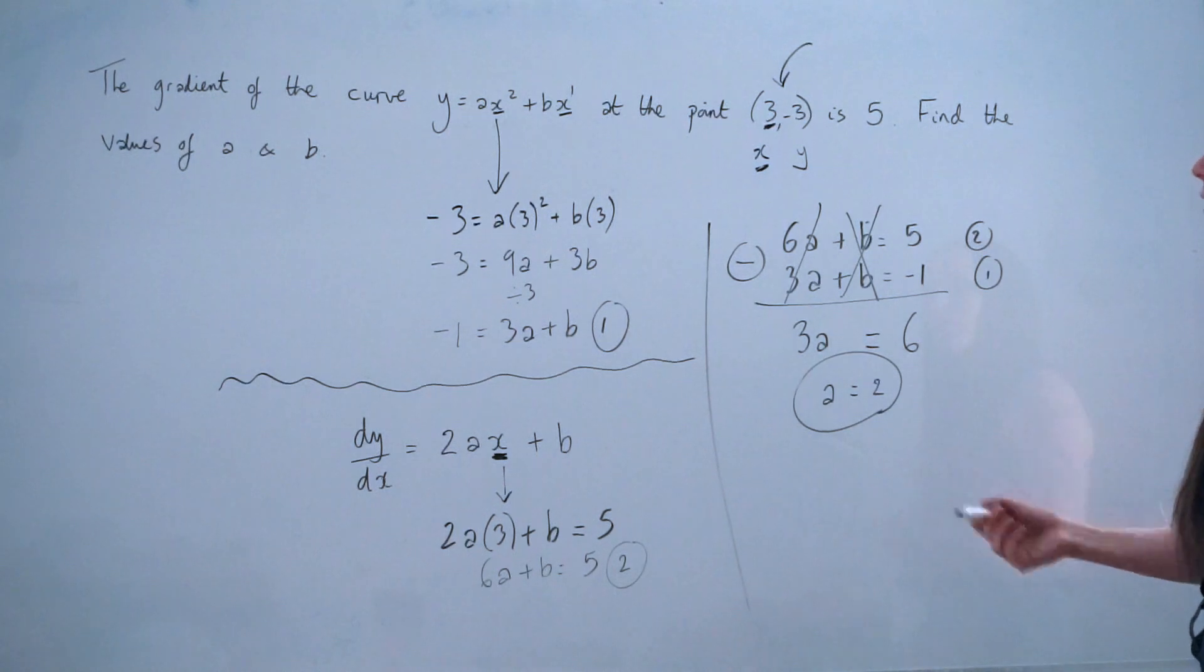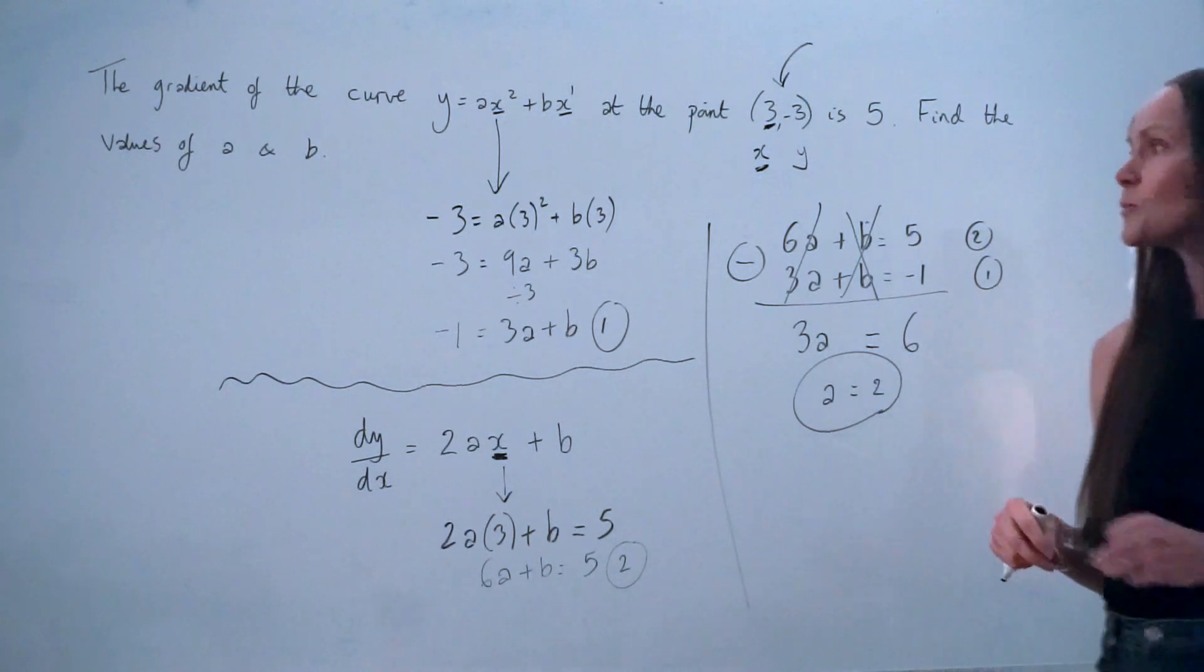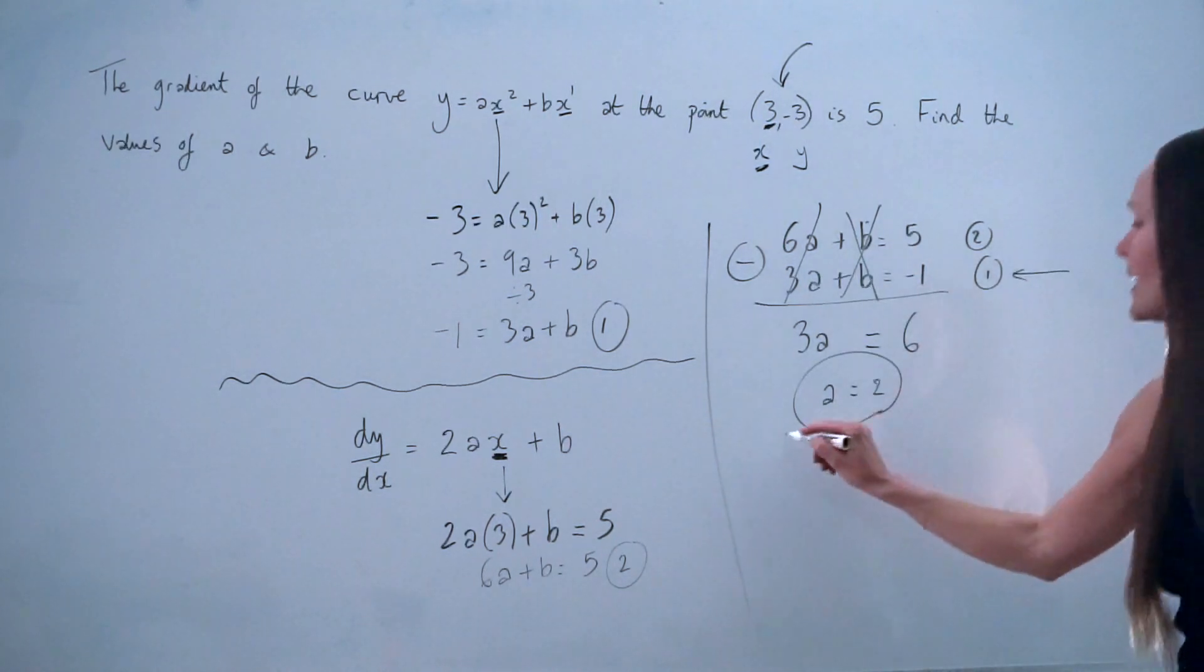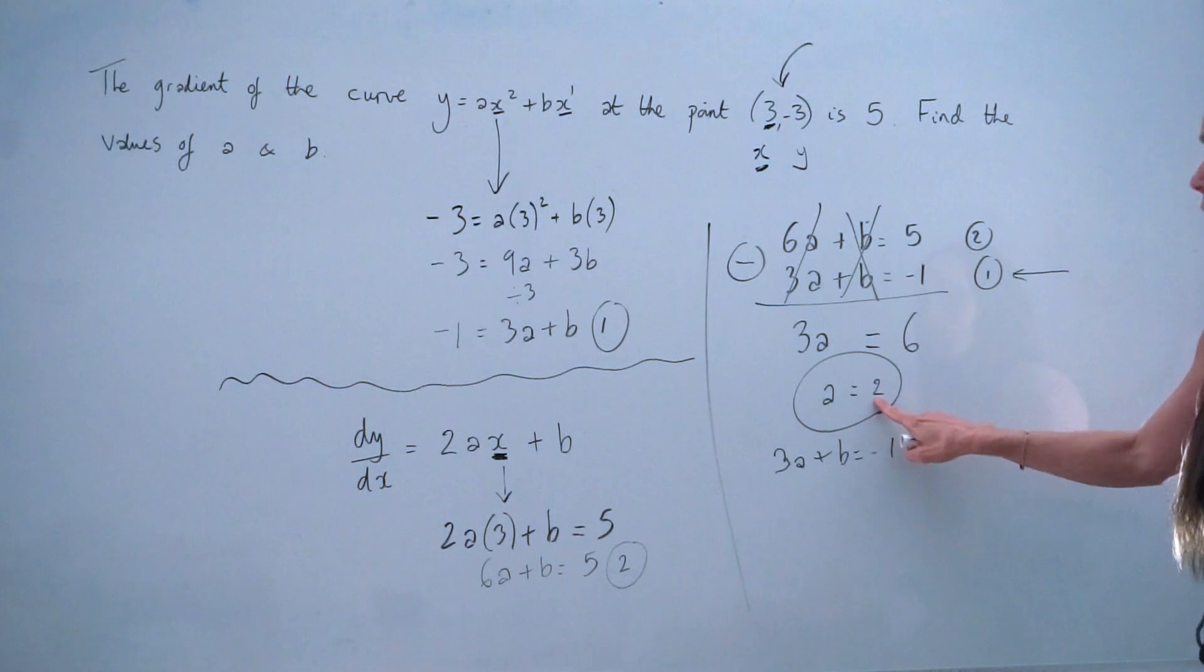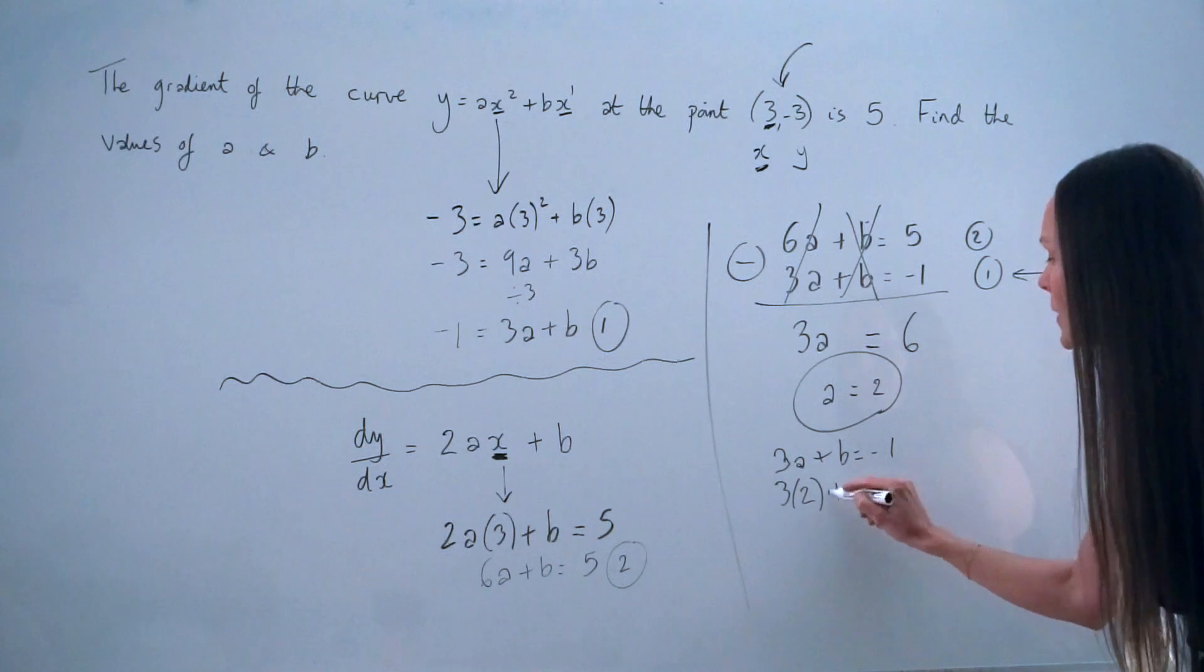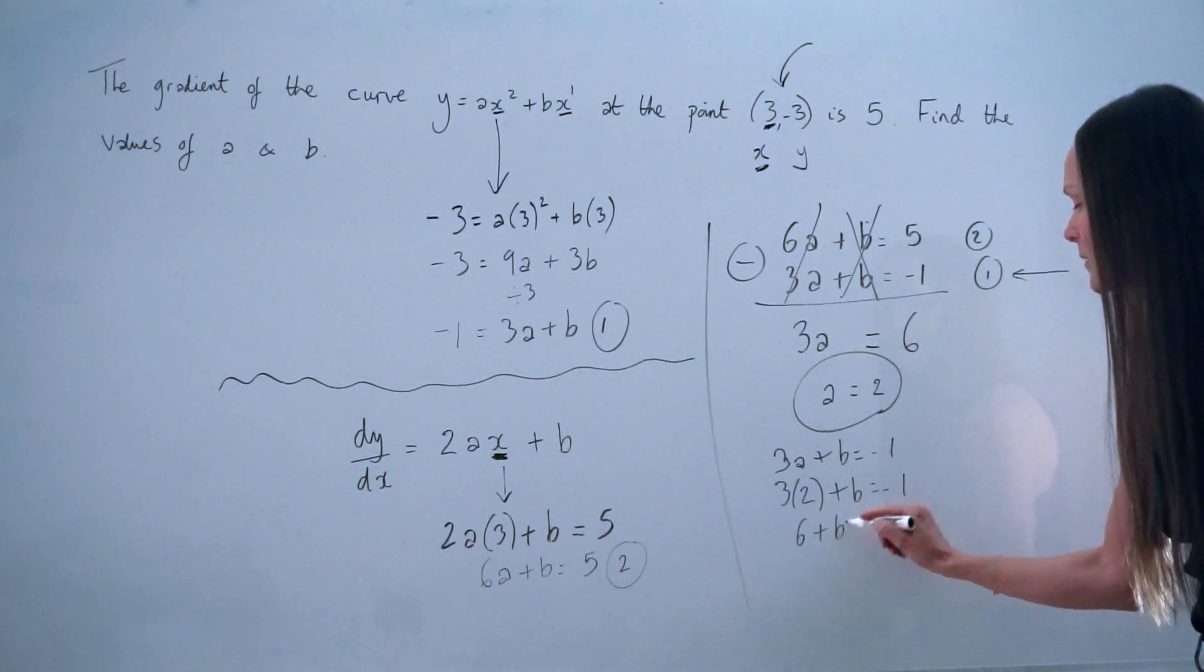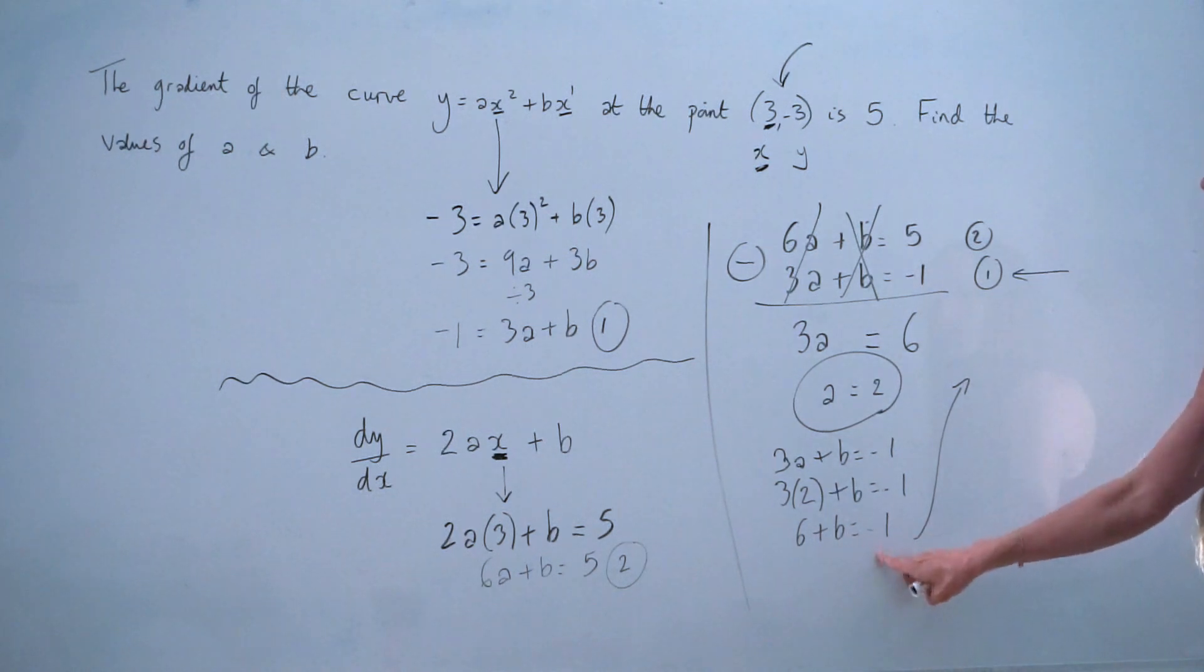So there's the first unknown value. To find the value of b, you need to take your value of a, so 2, and substitute it into any of the equations. So let's say we take equation number 1. So 3a plus b equals minus 1. And we're going to change the letter a to 2. So instead of 3a, I've got 3 lots of 2 plus b equals negative 1. 3 times 2 is 6, so 6 plus b is equal to negative 1. And then to finish, you just have to subtract 6 on both sides so that b is equal to negative 7.